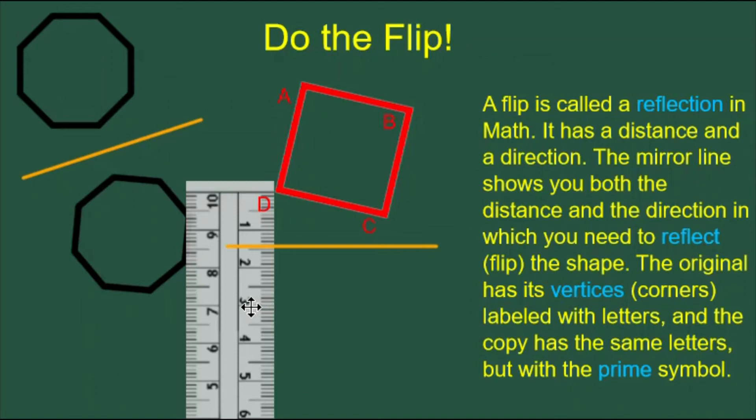The easiest way to do this is to draw a line from the vertex, through the mirror line, and then twice as far on the other side.